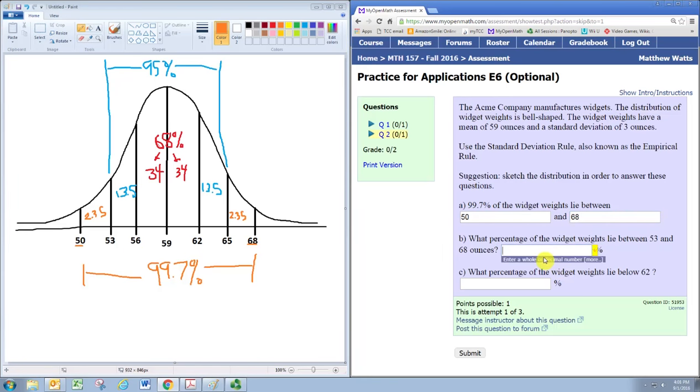And the next question we're asked, what percentage of the widgets lie between 53 and 68? So if you're going from 53 to 68, then you need to include the whole blue region of 95%, which goes from 53 to 65. You need to include all that, plus you want to add on this extra piece here. So take the 95% that's within two standard deviations, and add on 2.35% to give you 97.35%.